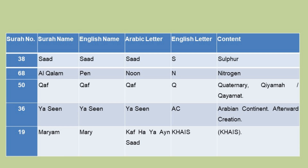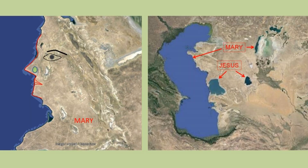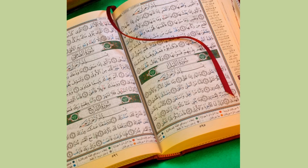Chapter 36 — Ya Sin — AC — Arabian Continent, After-word Creation. Chapter 19 — Khaf Ha Ya Ayn Sad — KHYAS — meaning HASH. The meaning of HASH is: seeking refuge, humble, beautiful. All these meanings suit this chapter, which is about the story of Mary and Jesus. All this information indicates that there is no correct ordered arrangement in the present form of the Quran according to specific topics.